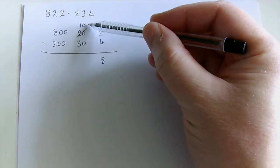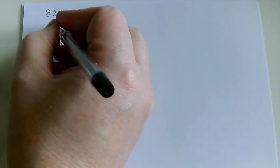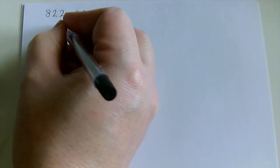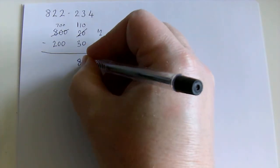On to the tens. 10 subtract 30. Again in real life you can't do that. So we move 100 across. The 800 becomes 700. The 10 becomes 110. 110 subtract 30 is 80.